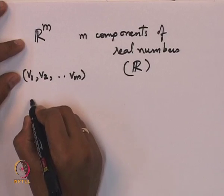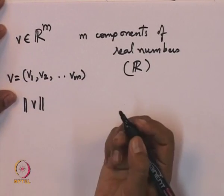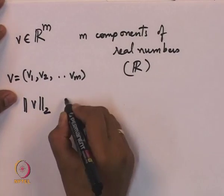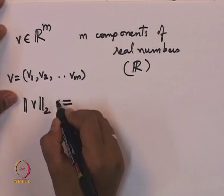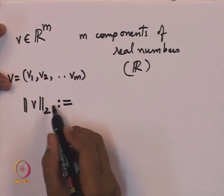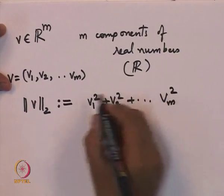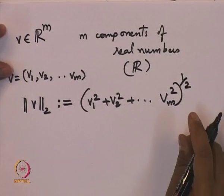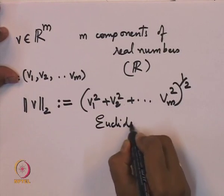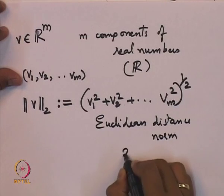Now one can speak of a norm for a vector v in R^m. The two-norm of v is defined as the square root of v1 squared plus v2 squared plus up to vm squared. This is the most common notion of distance, which we call the two-norm, also called the Euclidean norm or Euclidean distance. It is called the two-norm because instead of the second power one could take any power p.